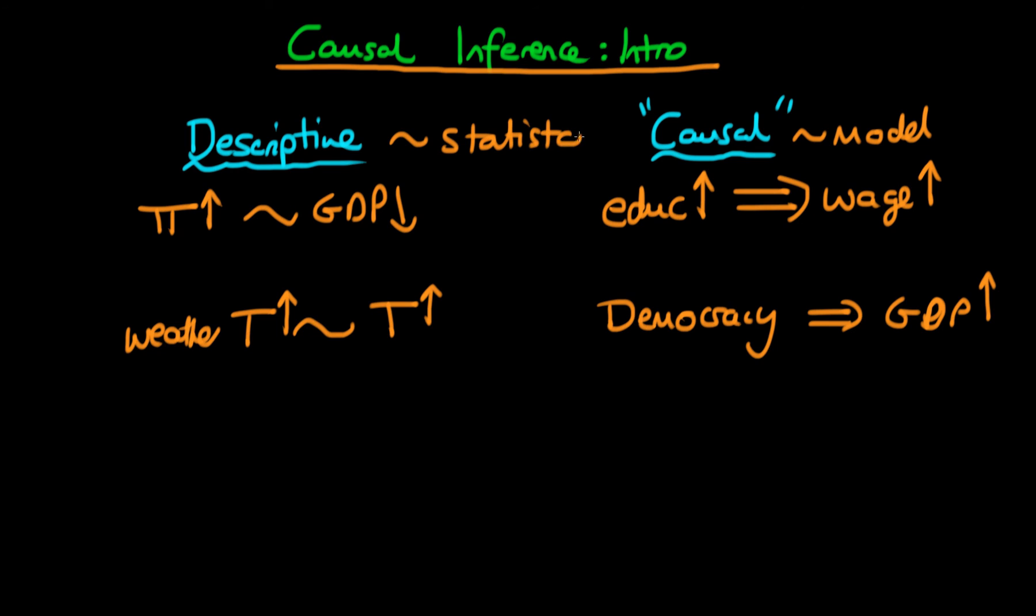A model is much more useful than a statistical description of a situation because it allows us to envision what would happen in different situations a lot better than a statistical model would. In the next few videos, I'm going to be providing a description of what it actually means for a process to be causal in the realm of econometrics.